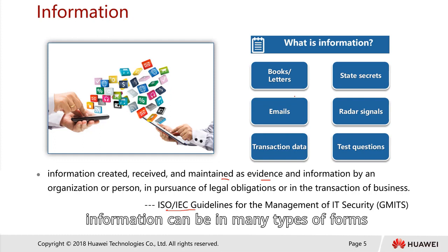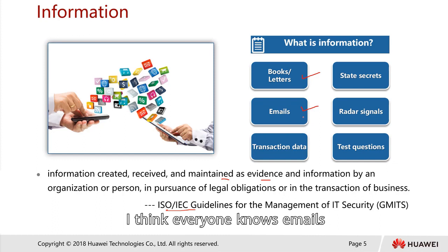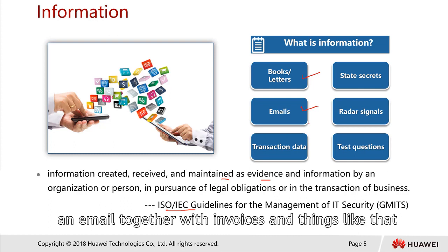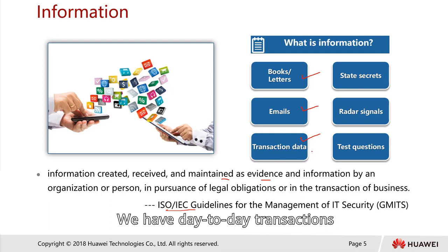Information can take many forms. We could have information in books or letters, and also email — everyone knows we have tons of emails every day. All of these are information, and some of them are very important, some are very secretive, and some could involve legal issues, like emails together with invoices and transaction data.